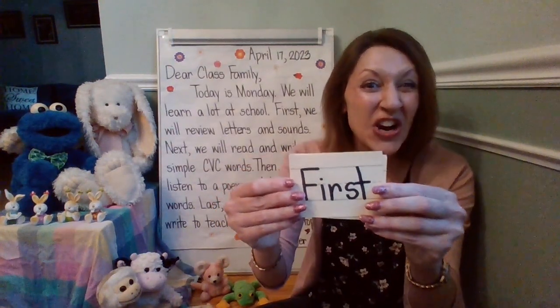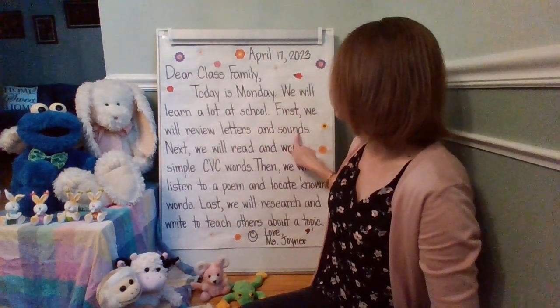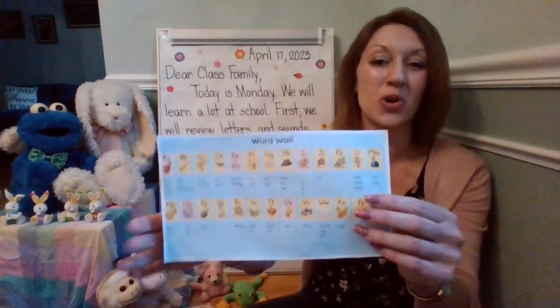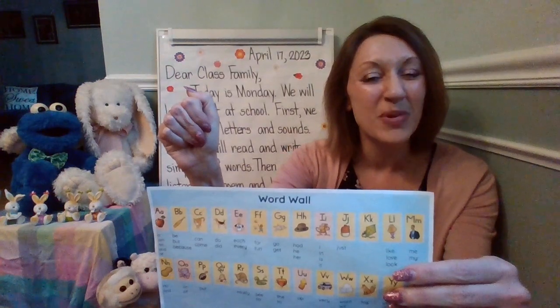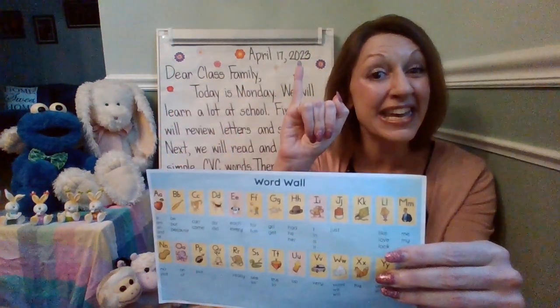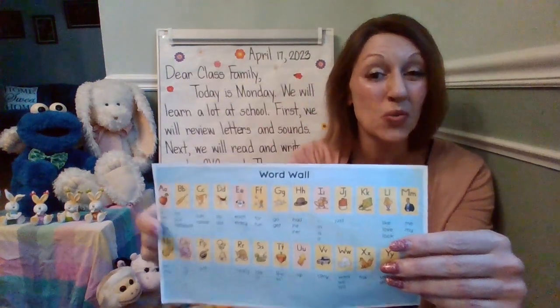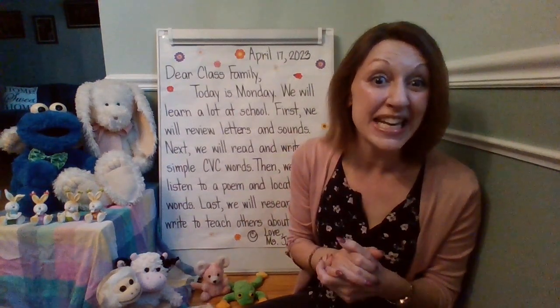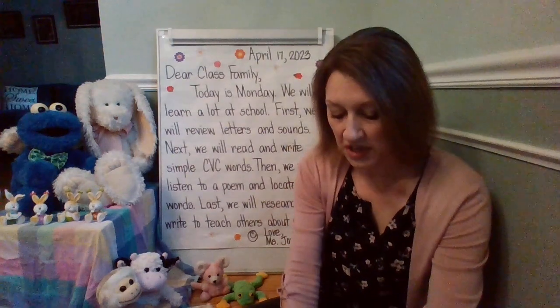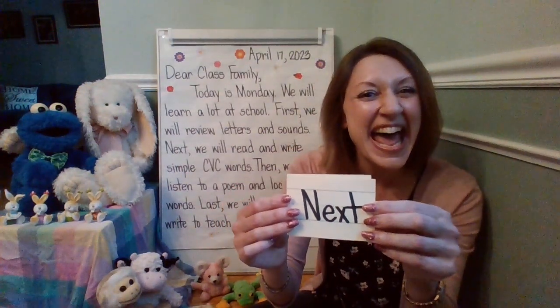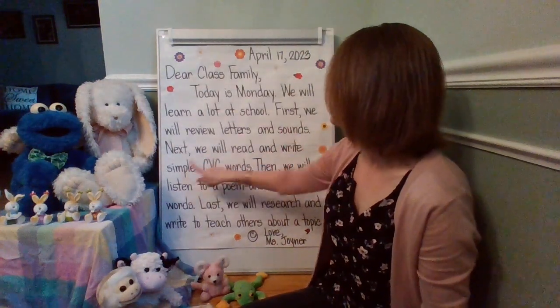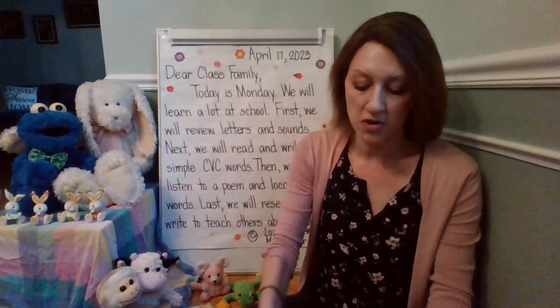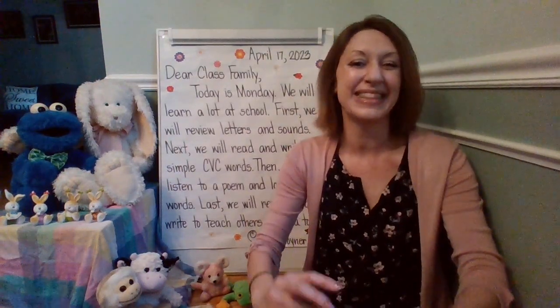First, we will review letters and sounds. Just like we do every single day in kindergarten, we use the word wall as a resource to review the letters and sounds, pictures to match the word, and American Sign Language. Let's review the vowels: A, apple, ah; E, ed, eh; I, itch, i; O, octopus, ah; and U, up, ah. We are going to be seeing those short vowels and those sounds in CVC words. Next, we will read and write simple CVC words — let's go ahead and review some at this time.